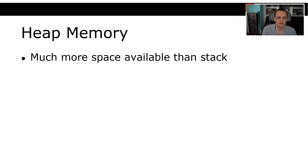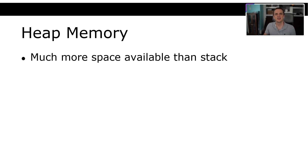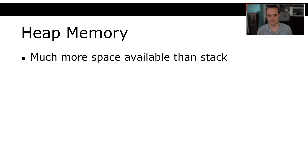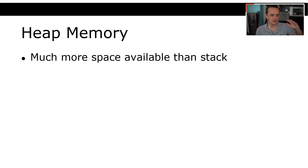Heap memory has much, much more space available than the stack. Essentially, how much RAM you have is roughly how much heap memory you have — when you see programs using gigabytes of RAM, that's mostly coming from the heap. You allocate heap memory via the `new` keyword: `type* varName = new type`.